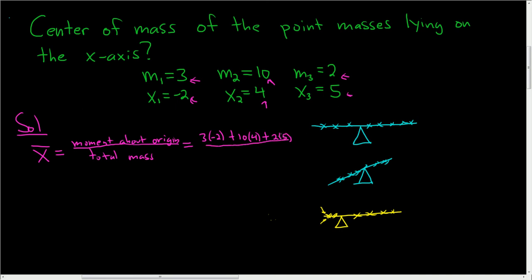it's just the total mass of the system. So you add up all the little masses here. So it'll be 3 plus 10 plus 2.